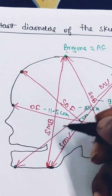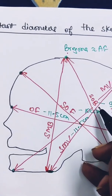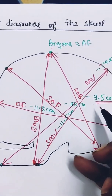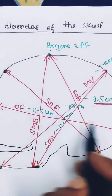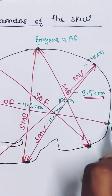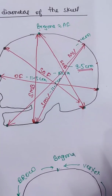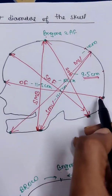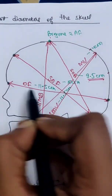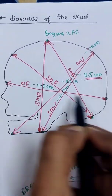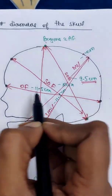Next is the submentobregmatic diameter. It extends from the submentum — that is the floor of the mouth — to the center of the bregma. The submentobregmatic diameter is the same as the suboccipitobregmatic diameter, that is 9.5 centimeters. Another one is the occipitofrontal diameter, which extends from the occipital eminence to the root of the nose. The occipitofrontal diameter is 11.5 centimeters.